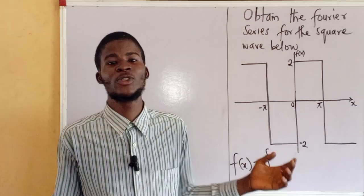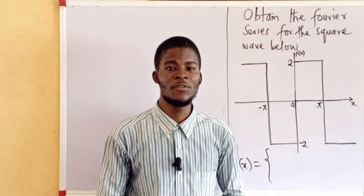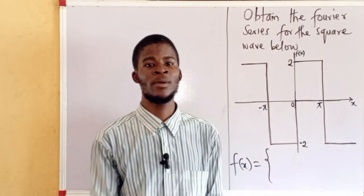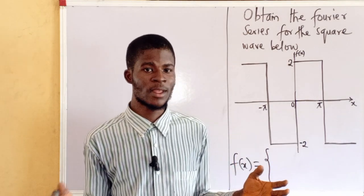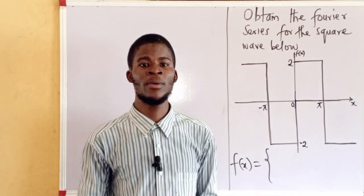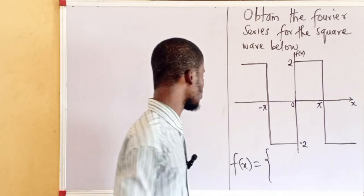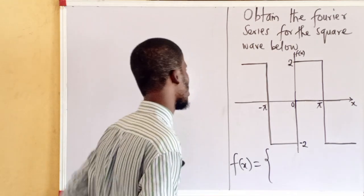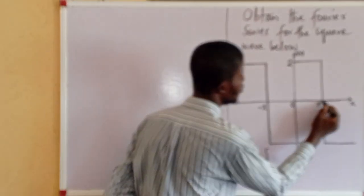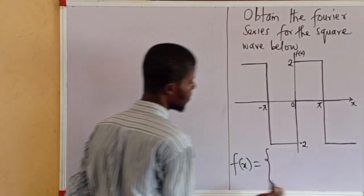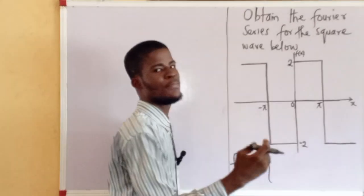Remember that for an odd function, we only need the Fourier coefficient b sub n. For an odd function, a₀ and a sub n are zero. Since it is from minus pi to pi, we can take it as pieces.